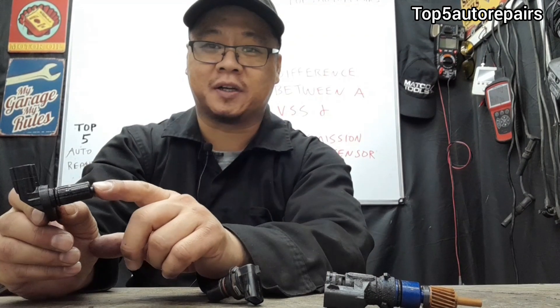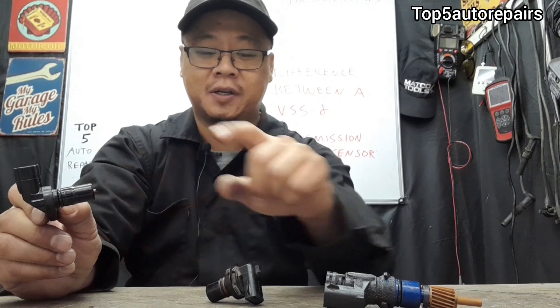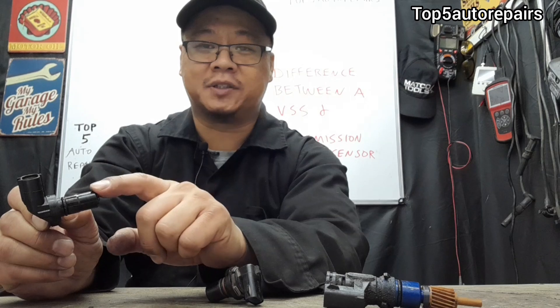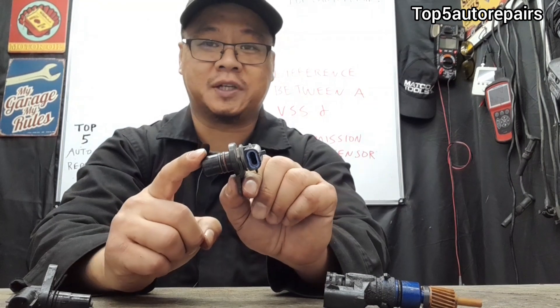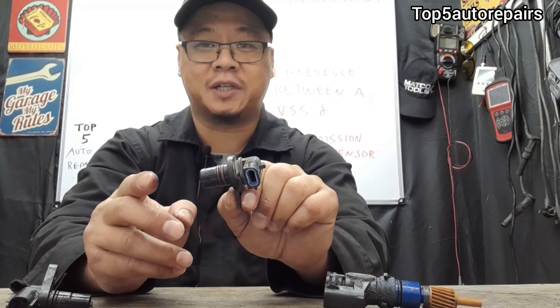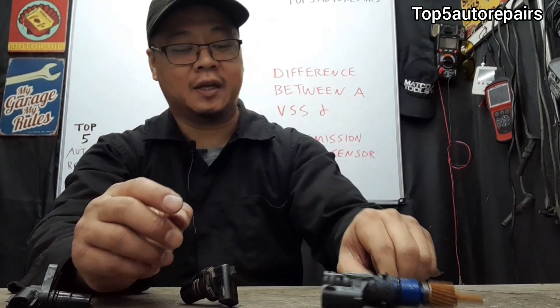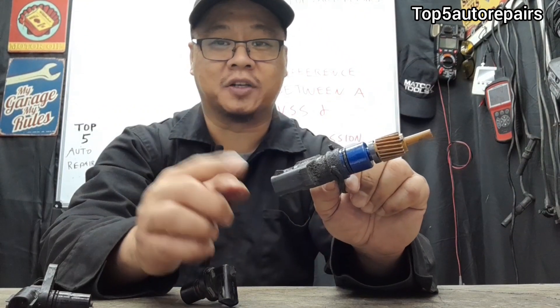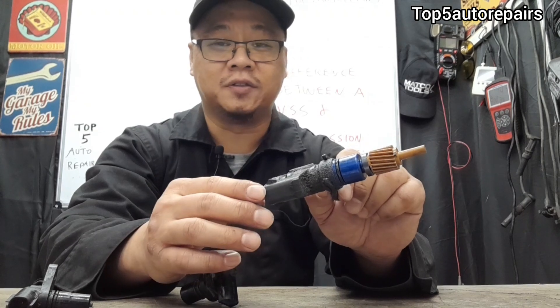The difference between a vehicle speed sensor and a transmission speed sensor is due to its location. The transmission speed sensor consists of the input shaft speed sensor and the output shaft speed sensor. The input shaft speed sensor is mounted in the input shaft location, and the output shaft speed sensor is mounted on the output shaft location. The vehicle speed sensor could be mounted anywhere on the transmission or on the transaxle.